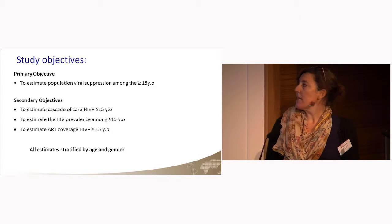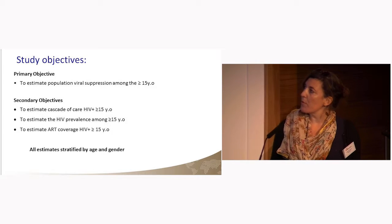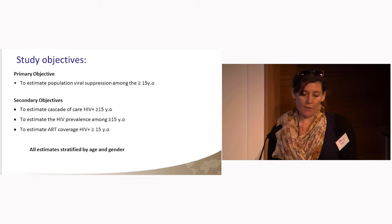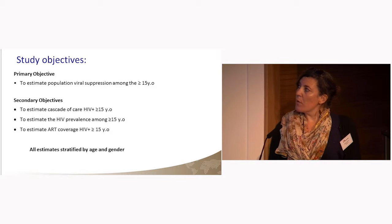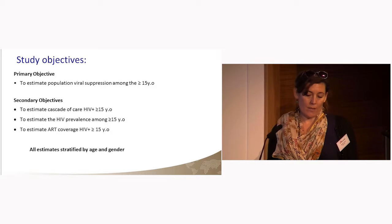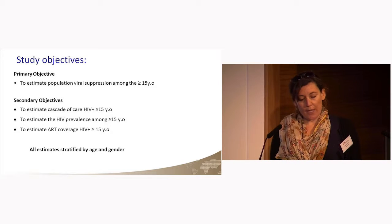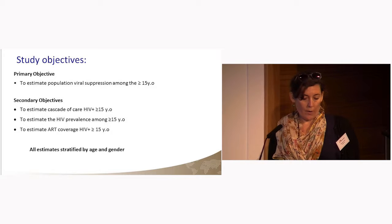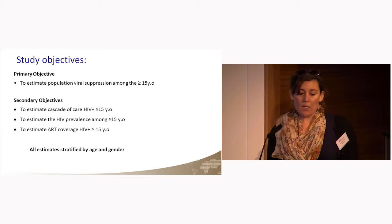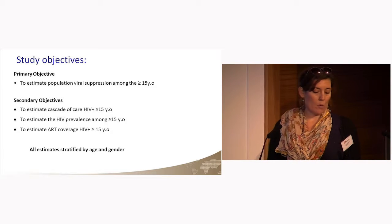In terms of study objectives, I'm presenting the objectives for which we have results in this presentation, though we had other objectives as well. The primary objective was to estimate the population viral load among adults aged 15 years or older. We defined viral load suppression as all viral load results less than 1,000 copies per milliliter. Secondary objectives were to estimate the cascade of care among HIV-positive individuals aged 15 or older, to estimate HIV prevalence, and to estimate ART coverage among HIV-positive adults.